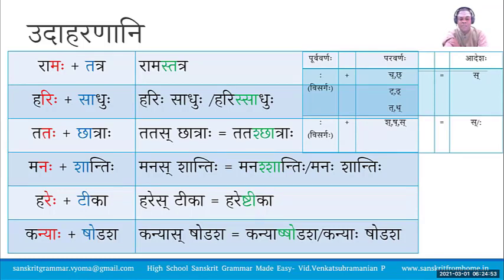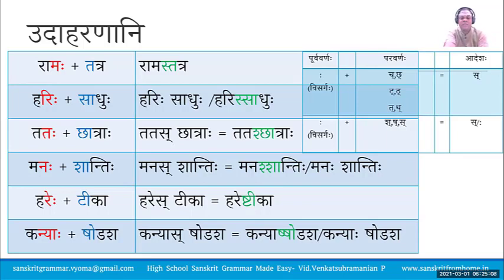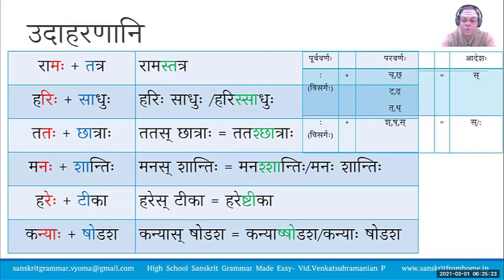For Manaha Shantihi: Visarga is replaced by Sakara giving Manas Shantihi; with the chance of Shchutva — Sakara followed by Shakara — the final form is Manaś Shantihi. For Harehe Tikah: Visarga gets replaced by Sakara giving Hares Tikah; Sakara is followed by Shakara so Shtunashtuhu — Shtutva Sandhi is possible — giving final answer Hareś Tikah.